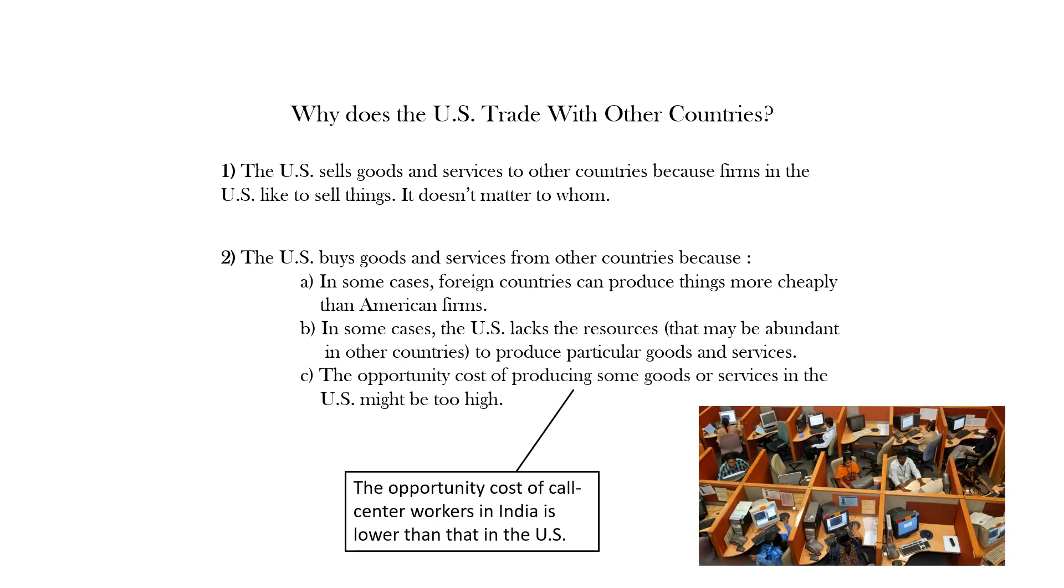The opportunity cost of producing some goods or services in the U.S. might be too high. Even though the U.S. might do a better job of producing a good or service, the opportunity cost of the resources required to produce that good or service might be too high and can be used more productively somewhere else. Even though the U.S. might have an absolute advantage in the production of some good or service, that is, can do a better job of producing it, the country that can produce it with the lower opportunity cost would have the comparative advantage. By allowing the country that has the comparative advantage to produce that good or service would result in a better allocation of resources.